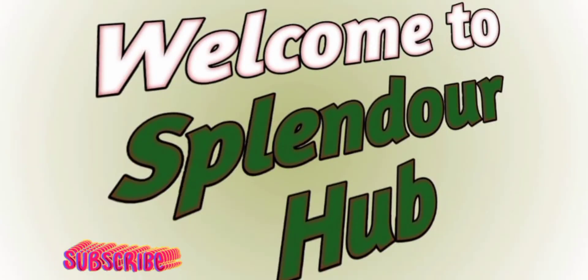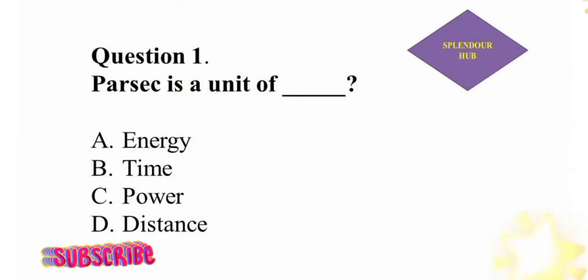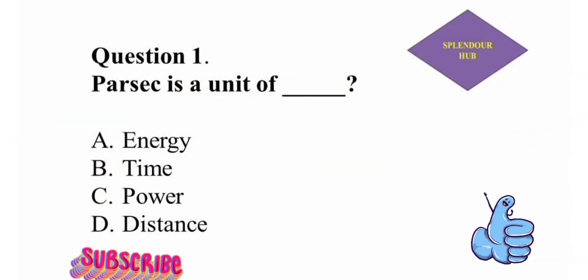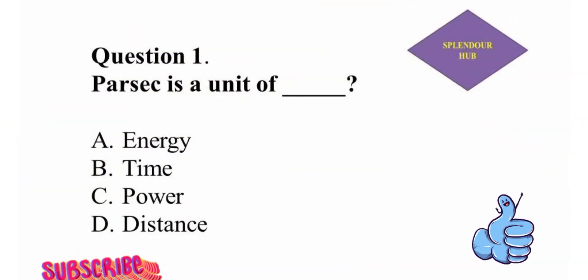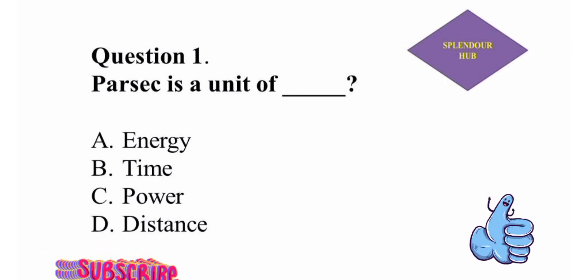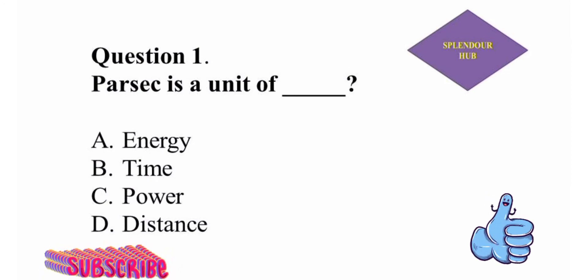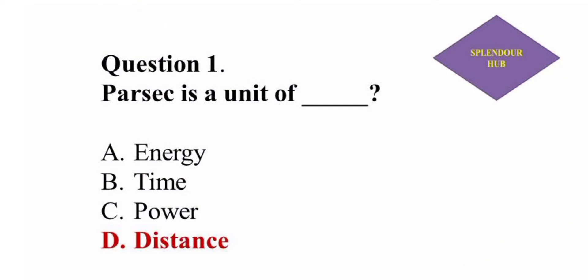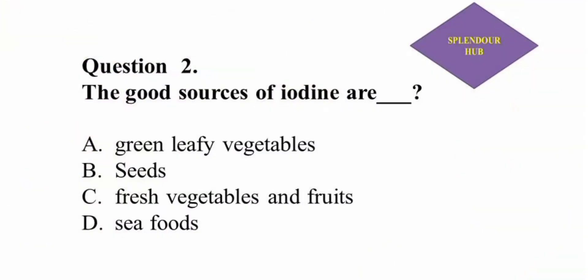Welcome to the Splendor Hub. Question number 1: Parsec is a unit of — option A: energy, option B: time, option C: power, option D: distance. Answer: Parsec is a unit of distance.